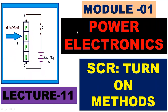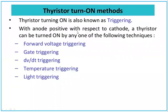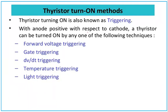In today's class we will be concluding SCR. The last portion is different turn-on methods of SCR — how we can ensure that current flows from anode to cathode in a silicon controlled rectifier. Thyristor turning on is also known as triggering or firing. With anode positive with respect to cathode, a thyristor can be turned on by any one of the following techniques.